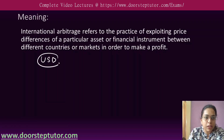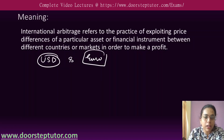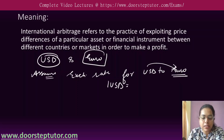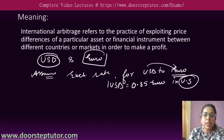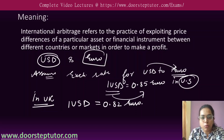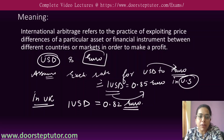Let's explain with an example. There are two currencies involved: USD dollar and euro. Assume the exchange rate for USD to euro — when you exchange your dollar into euro — the rate is 1 USD equals 0.85 euro in the US market. If you go to Europe, you see that 1 USD equals 0.82 euro.